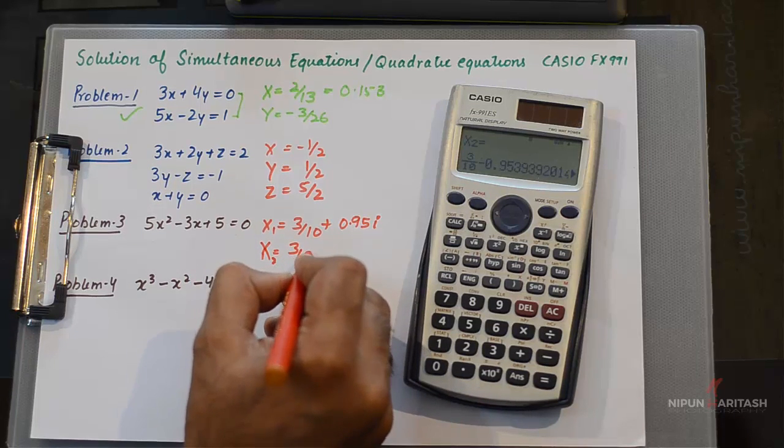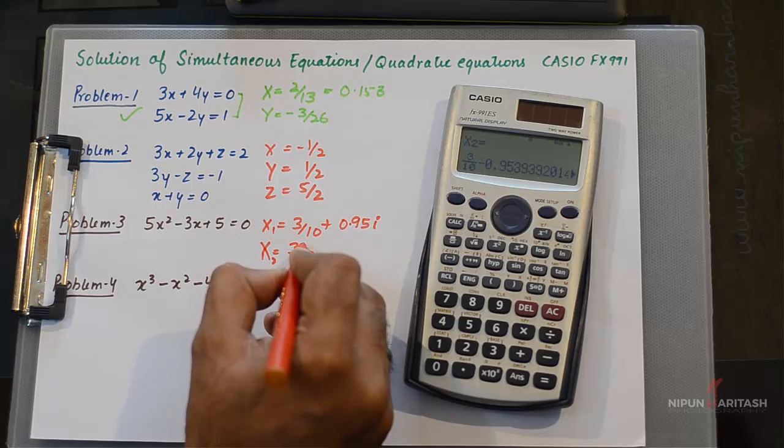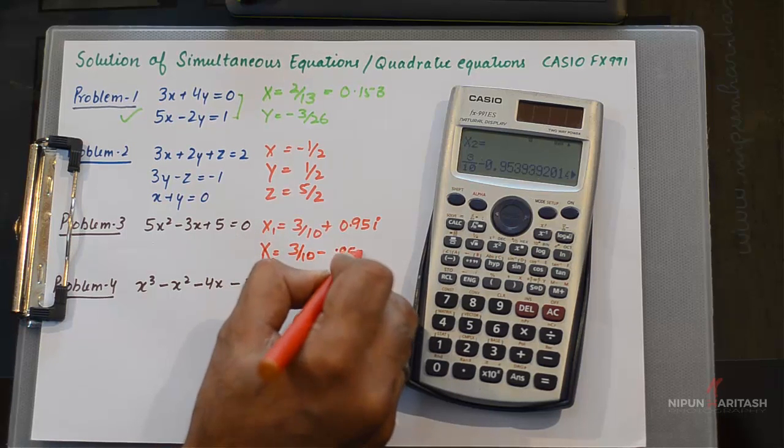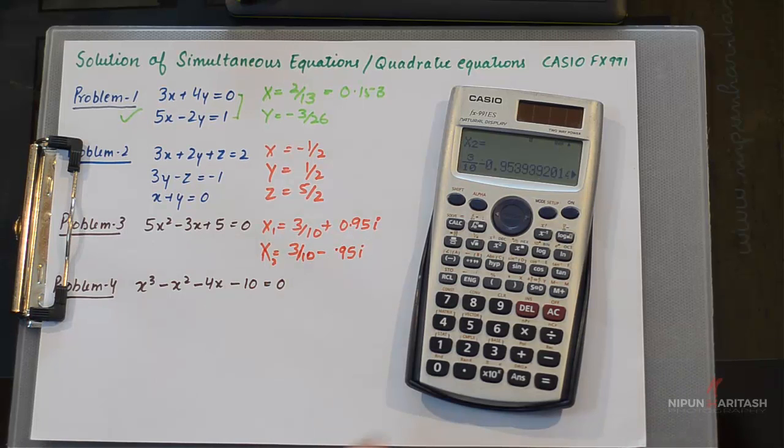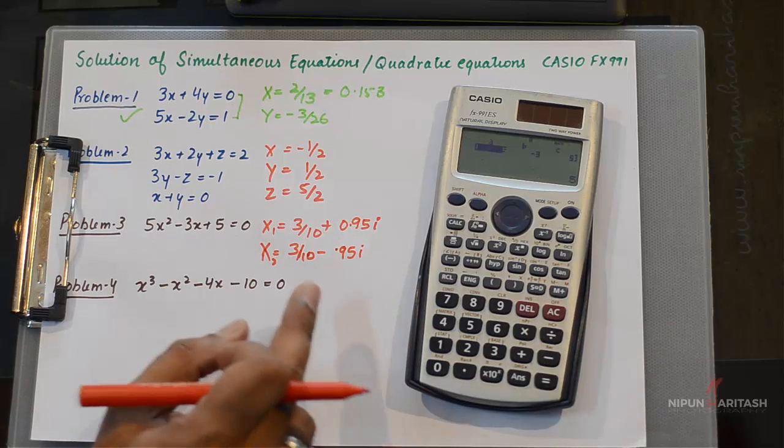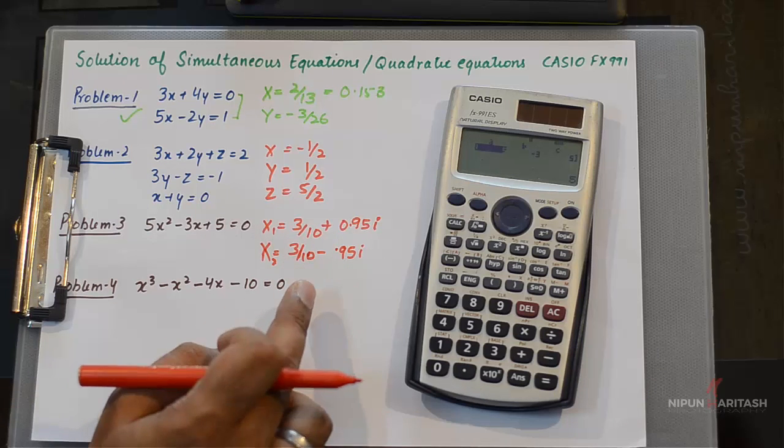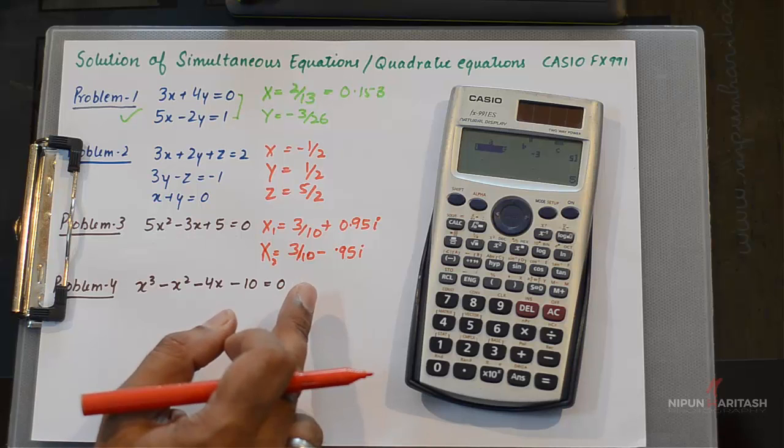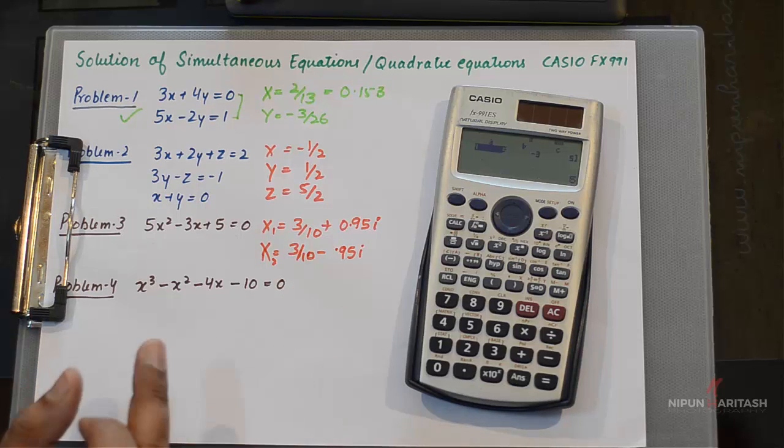is 3/10 - 0.95i. If you want to convert these complex numbers, which are written in rectangular coordinate form, into polar form, you can refer to my other video.